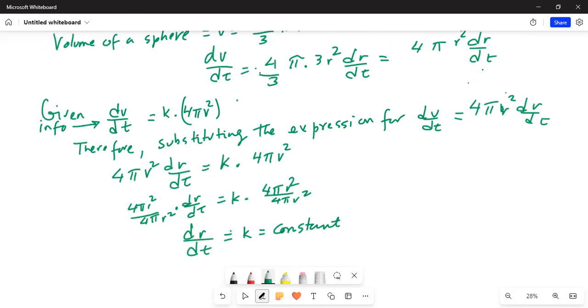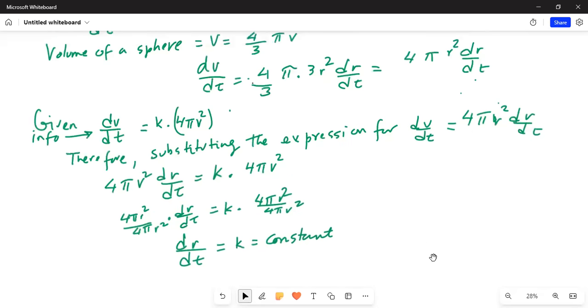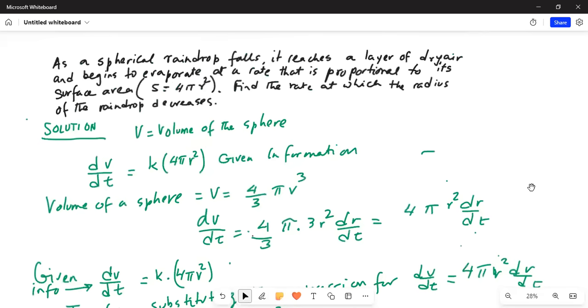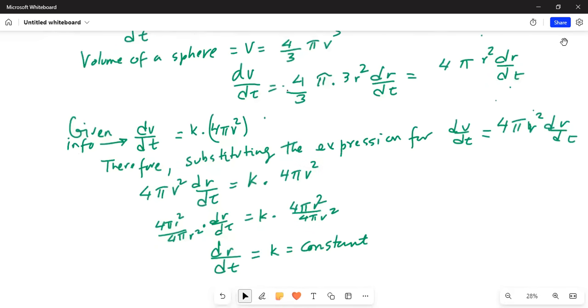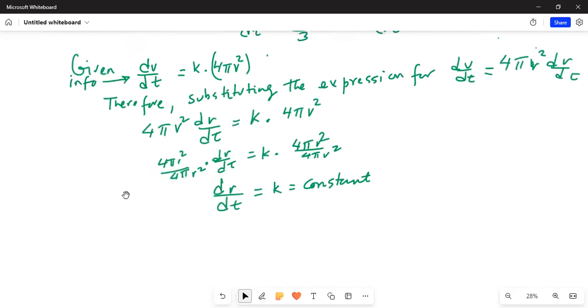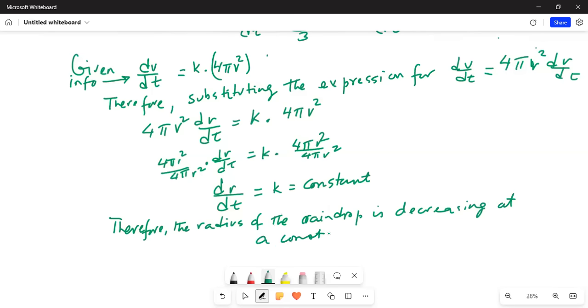Thus, the original question was find the rate at which the radius of the raindrop decreases. So, this is the answer. So, it decreases. The radius, therefore, the radius of the raindrop is decreasing at a constant rate of k.